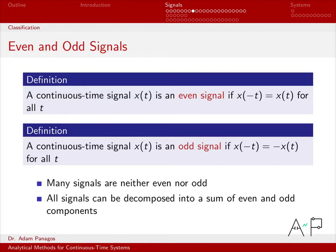A signal that I give you might be an even signal, or you could say it's an odd signal. But some signals aren't either — they're not even and not odd. However, you can always decompose any signal into a sum of an even part and an odd part. You can always write x(t) as an even component plus an odd component.